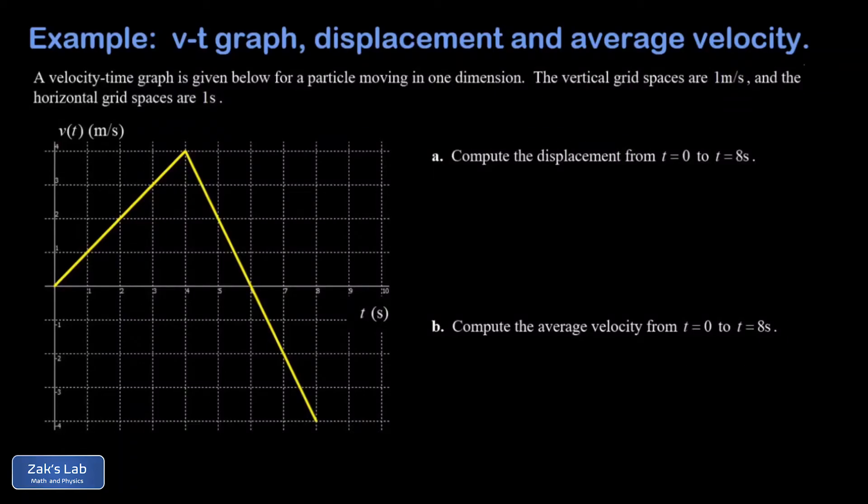In this video we're given a velocity-time graph for a particle moving in one dimension. The vertical grid spaces are 1 m/s and the horizontal grid spaces are 1 second. In part a we want to find the displacement of this particle, and in part b we want to find the average velocity.